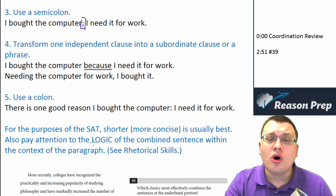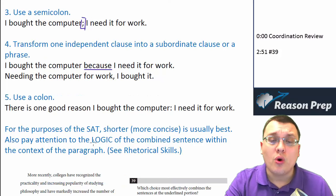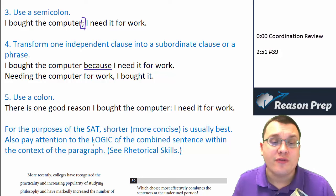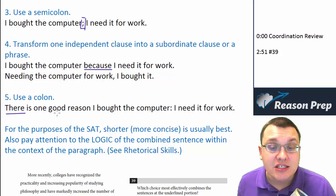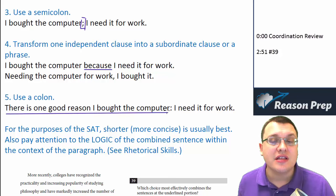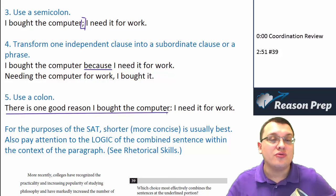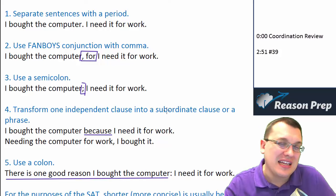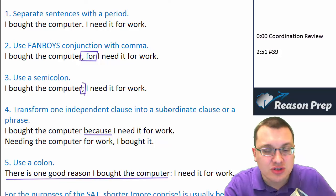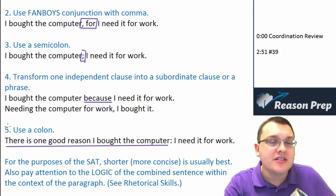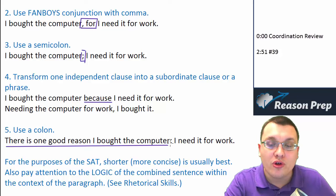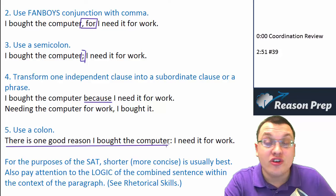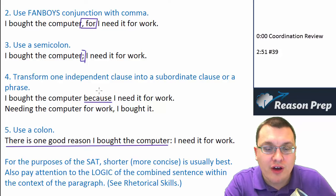You could also use a colon. So: 'There is one good reason I bought the computer: I need it for work.' I had to change this because it didn't really make sense to just say 'I bought the computer: I need it for work' — that's a little strange. The point is, you've got to have a complete independent sentence right before the colon. And if you do, totally fine.